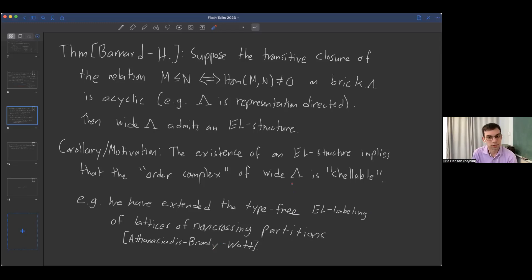To conclude, an open question and future work is whether EL structures always exist. We're in a pretty special case where we have this acyclic order on the bricks coming from HOM. For pre-projective algebras of type A, the answer is yes. These do not have this HOM relation being acyclic. But in work in progress with Xiuyu Yu, we describe an EL structure for these pre-projective algebras combinatorially. There's also a different EL labeling that Aaron Bancroft wrote about in 2011. With that, I am out of time. Thank you very much.